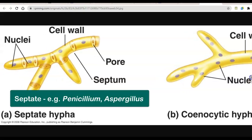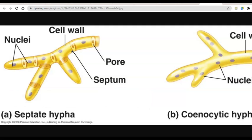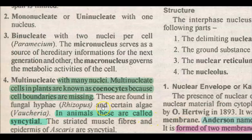In contrast, in septate hyphae, the nuclei are separated by septa — you can see the septa walls. This condition is found in higher-order fungi such as Penicillium and Aspergillus, which commonly have septate hyphae. Apart from fungi, the coenocytic condition can also be present in certain algae.